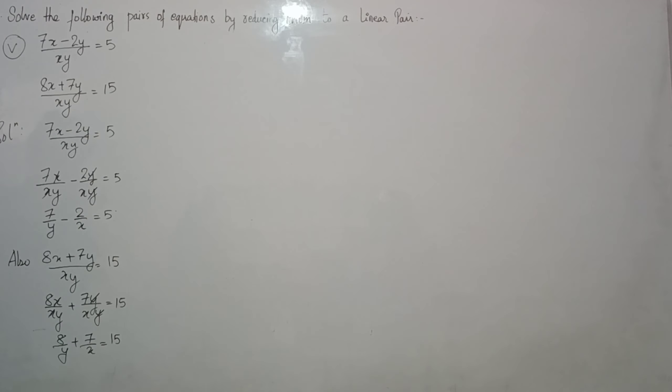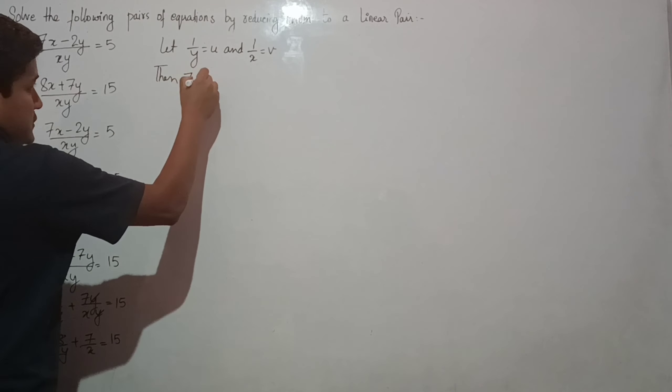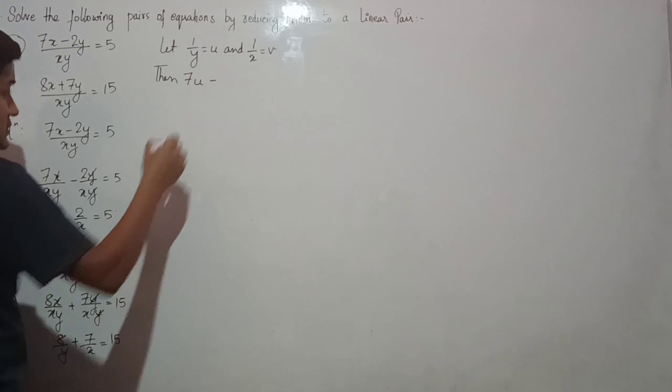Now we can see this question becomes like the previous questions, since the denominator has x and y. We need to find the values. Let 1 over y equals u and 1 over x equals v. Then the equations become 7u minus 2v equals 5, equation 1, and 8u plus 7v equals 15, equation 2.